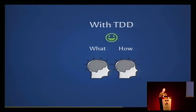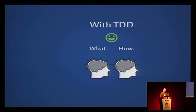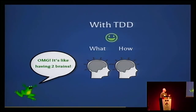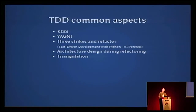On the other hand, when you use TDD, you mostly take care of the what when you're writing your tests — because the tests describe what should happen in the code. Then you take care of the how when you're writing the code itself. So you have your brain concentrating on each of those at two different times, which means it's like having two brains. You become much, much more powerful. Your code changes immediately.